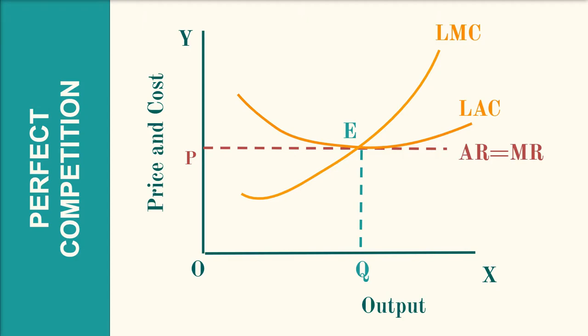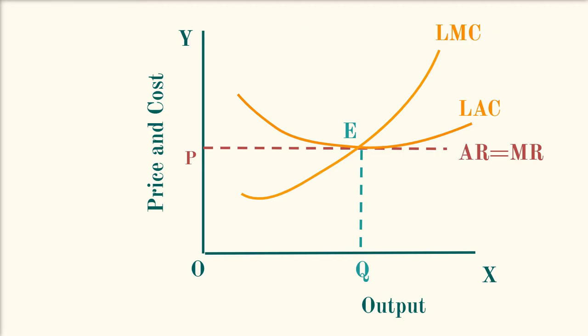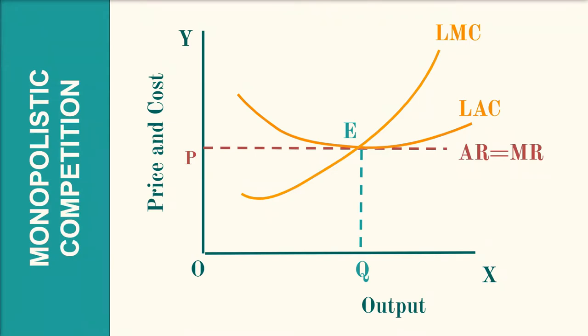What about monopolistic competition? The demand curve in monopolistic competition is not horizontal as under perfect competition — it is downward sloping. A downward sloping demand curve cannot be tangent to the LAC curve at its minimum point.